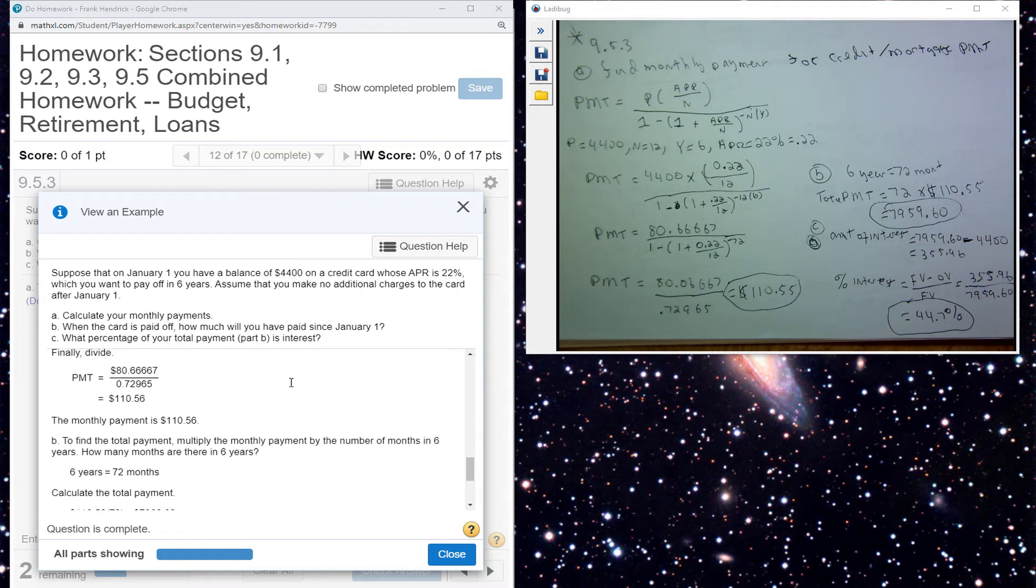To find the total payment, you know that they paid $110 every month for six years. So that's going to be 72 months. So they made 72 payments at $110. So the total amount they paid back on the credit card loan is $7,959.60.